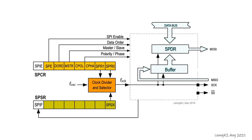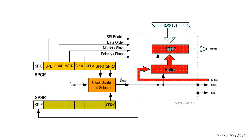At the same time, data coming from the slave through the MISO pin is collected in the buffer and transferred to the SPDR register.